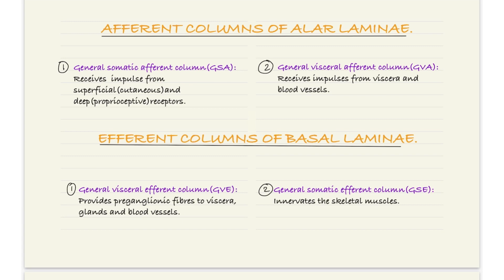Talking about the afferent columns of the alar lamina: the first is GSA — general somatic afferent — which receives impulses from the superficial and deep receptors; the superficial being cutaneous and the deep being proprioceptive, meaning sensing the position and movement of our body. The second is GVA — general visceral afferent — which receives impulses from the viscera and blood vessels. Regarding the efferent columns of the basal lamina: GVE — general visceral efferent — provides preganglionic fibers to the viscera, glands, and blood vessels. And GSE — general somatic efferent — innervates the skeletal muscles.